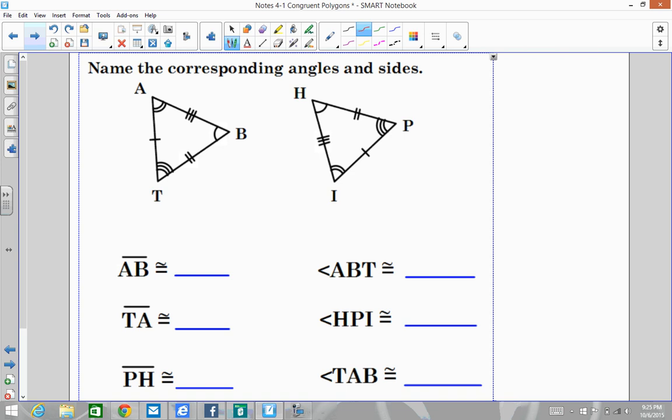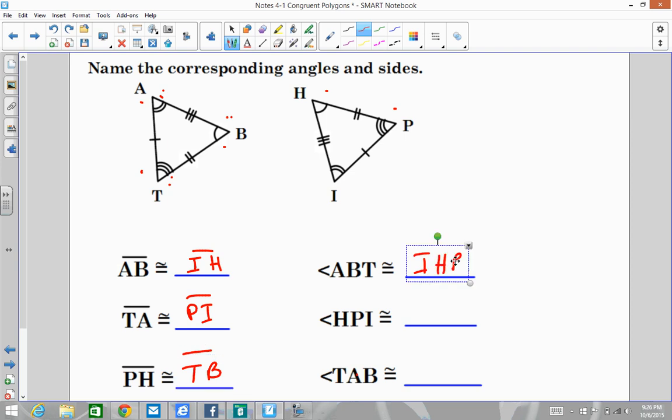So let's see here. If we have AB, we're going from this one to this one. So that's a double congruence mark to a single congruence mark. So this should be IH, double mark to the single mark. If we have TA, that's from the triple mark to the double mark, and so I go from the triple mark to the double mark. That is PI. And if we have PH, which is a triple mark to the single mark, a single mark is going to be TB. Now these are angles. So we have angle ABT. So ABT, that's a double, a single, and a triple mark. So a double, a single, and a triple mark. So that would be IHP. Now before we continue on with this, let's stop and let's make this a little bit easier.